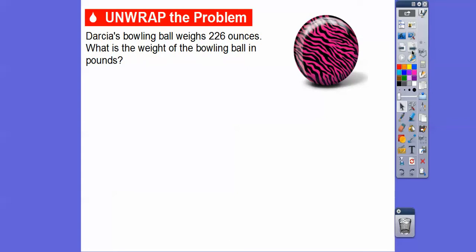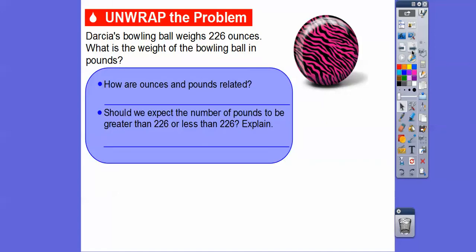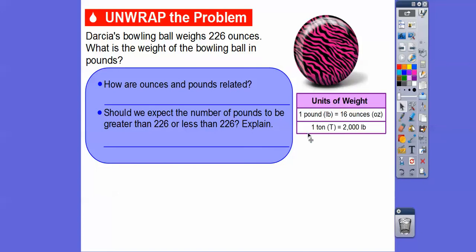Darcia's bowling ball weighs 226 ounces. What is the weight of the bowling ball in pounds? How are the ounces and the pounds related? Here's our conversion unit right here: one pound equals 16 ounces. Should we expect the number of pounds to be greater than 226 or less than 226? Since every 16 ounces is only one pound, it's definitely going to be less than.